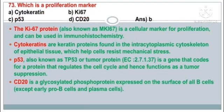Question number 73. Which is a proliferation marker? The answer is option B: Ki67.